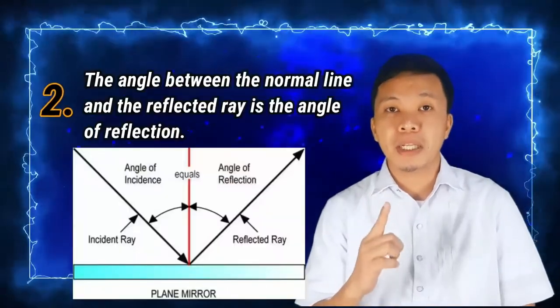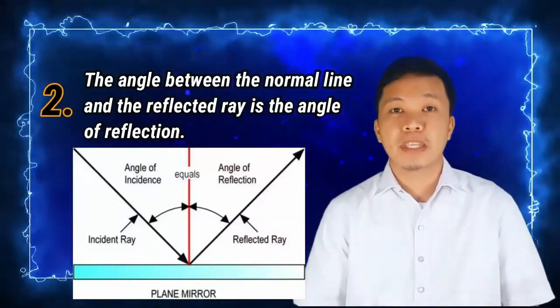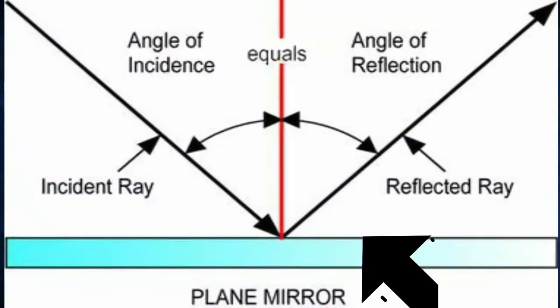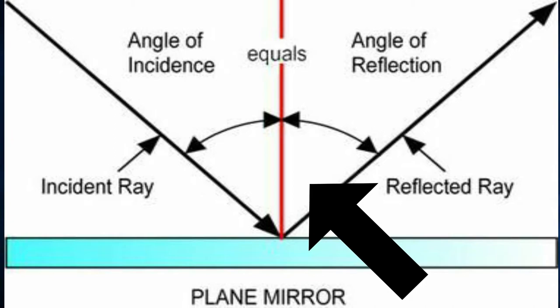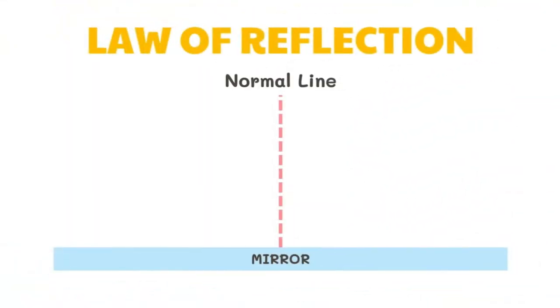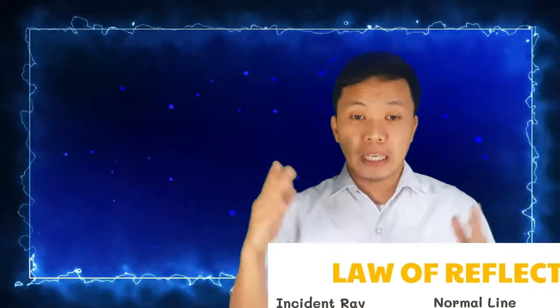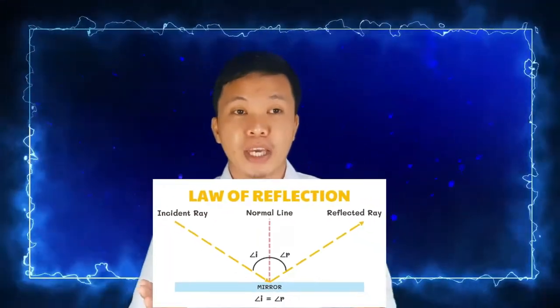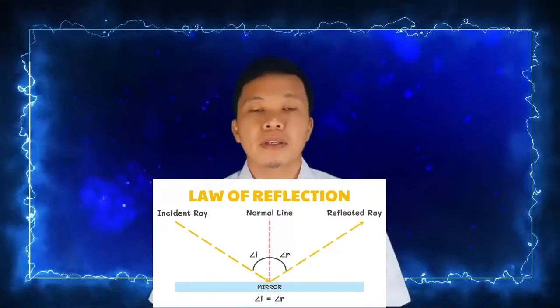Now let us proceed to the second law of reflection. The angle between the normal line and the reflected ray is the angle of reflection. Now what is a normal line? Normal line is an imaginary line that can be drawn perpendicular to the surface of the mirror, which is always in between the angle of incident and the angle of reflection.